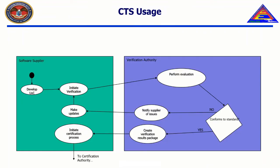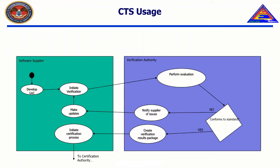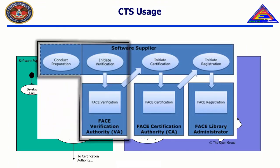In order to achieve FACE Conformance, the writer of a FACE UOC must perform the necessary steps in the FACE Conformance process. This includes having a Verification Authority, or VA, to verify that the UOC is fully conformant to the FACE Technical Standard. This is an intensive process where the VA tests the UOC in question for allowed and disallowed APIs and interfaces via the CTS and via manual inspection, as some tests are not machine testable. After a VA has verified a UOC, the software supplier must submit their verified UOC to the FACE Certification Authority, or CA.